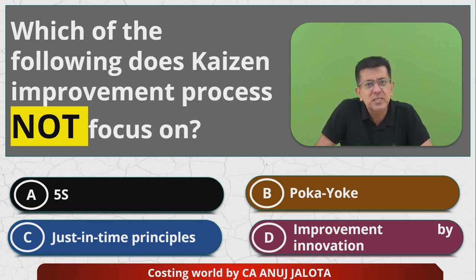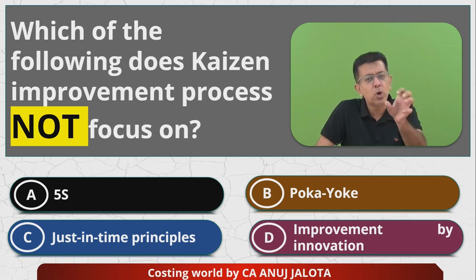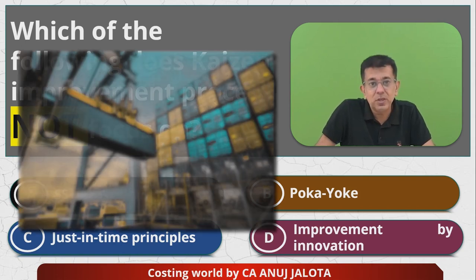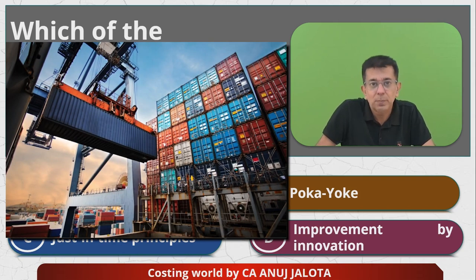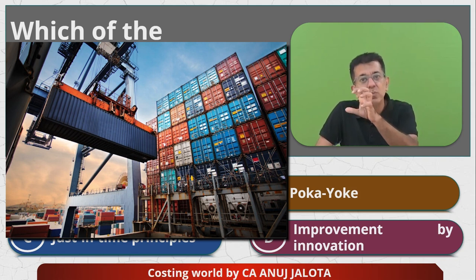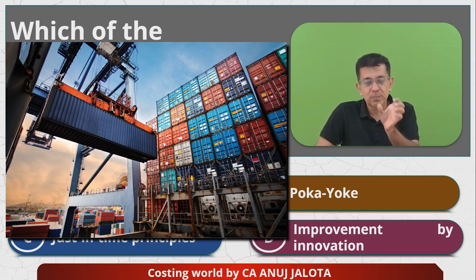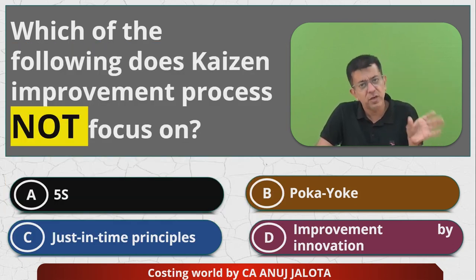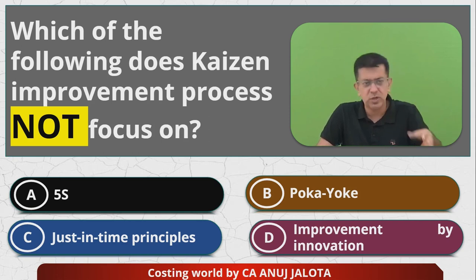Poka Yoke is basically a technique whereby we try to employ all those controls so that errors do not happen. Suppose you are a logistics or courier company and you want to send a parcel — there will be a few checks so that the correct parcel goes in the correct truck only, so a parcel for Jaipur will go in the truck going to Jaipur, and so on and so forth.